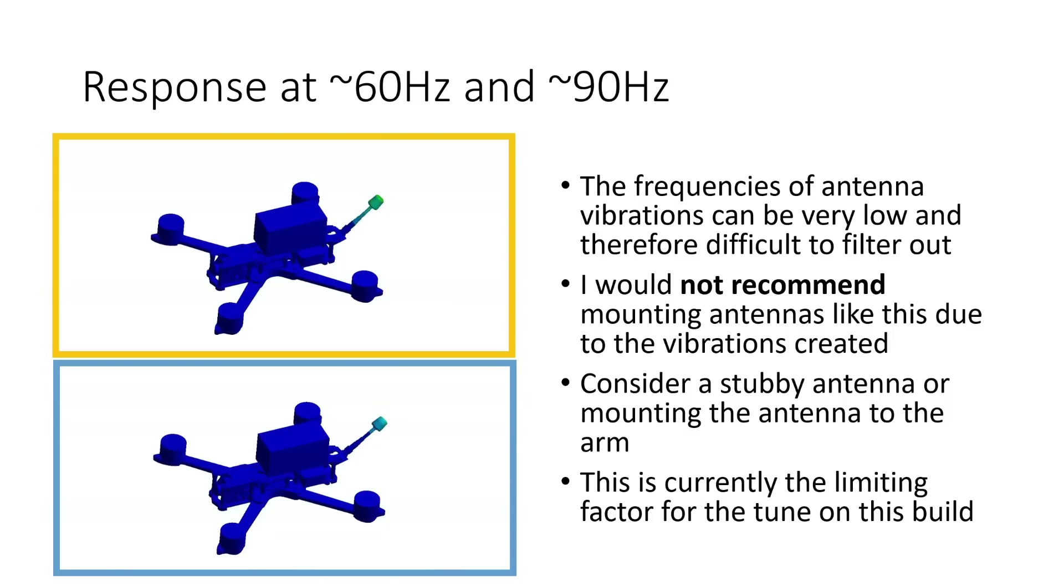So the upshot is I would really not recommend mounting antennas like this due to the vibrations that they create. So I would consider a stubby antenna or perhaps a more flexible antenna that you can restrain to the arm so that it can't move around. Whatever you do, whether you choose a stubby or an antenna and you mount it in another way, the aim is to avoid this long straight element with a mass on the end that has a flexible coupling to the frame that's able to wag around like the tail on a dog. We really want to avoid that and if we can do that the rest of the resonance performance of this iFlight frame will be really really excellent. So this is the first thing that we want to address and is currently the limiting factor for the tune on this particular build.